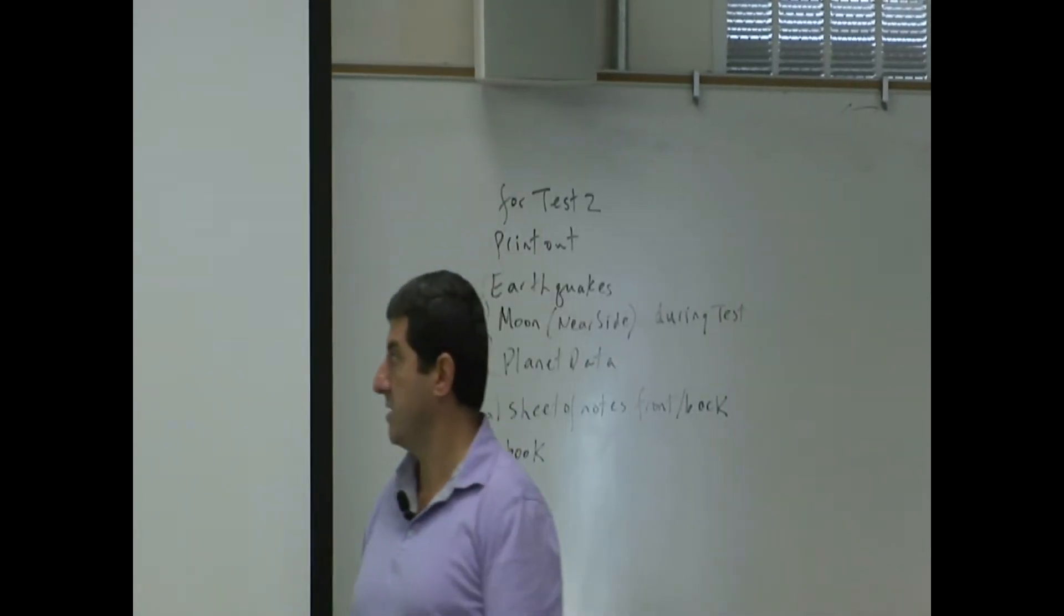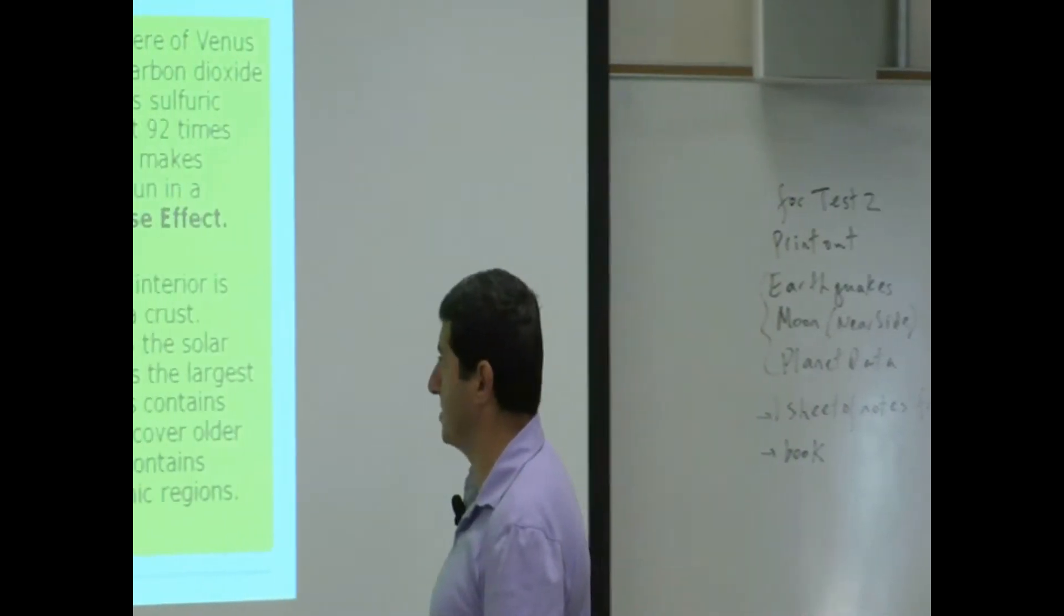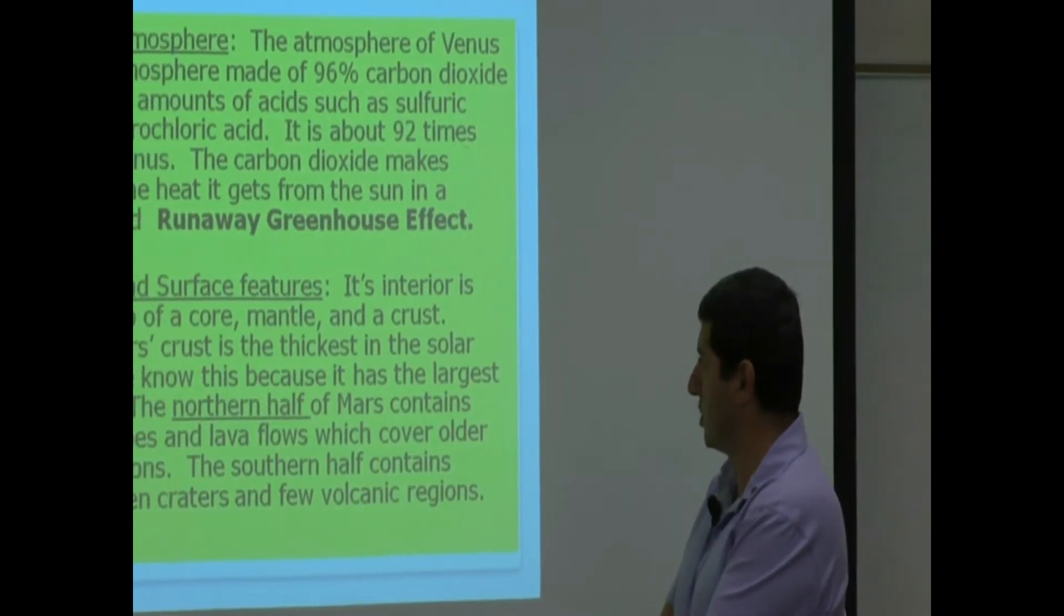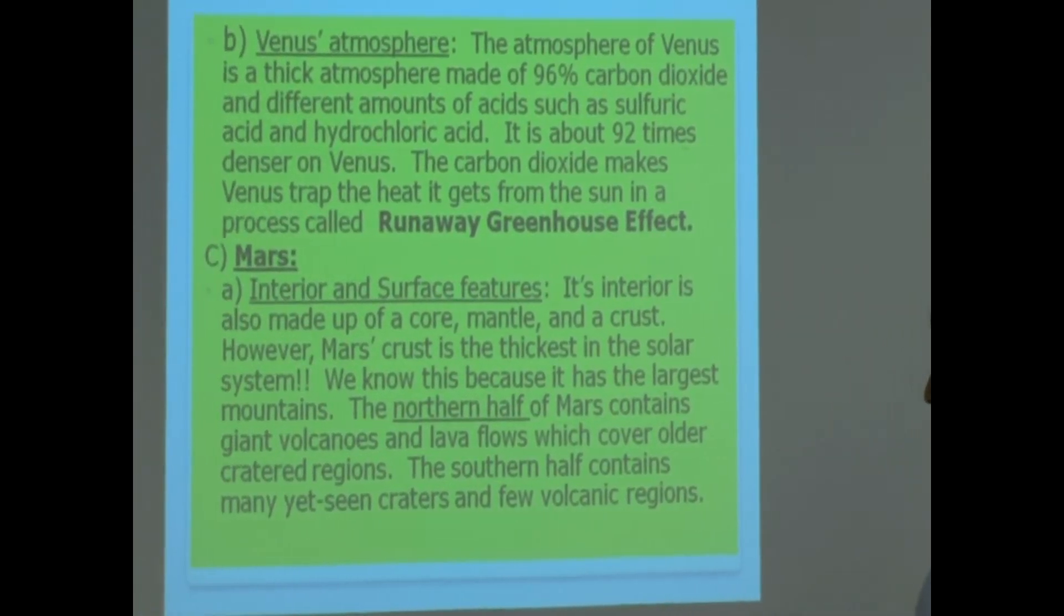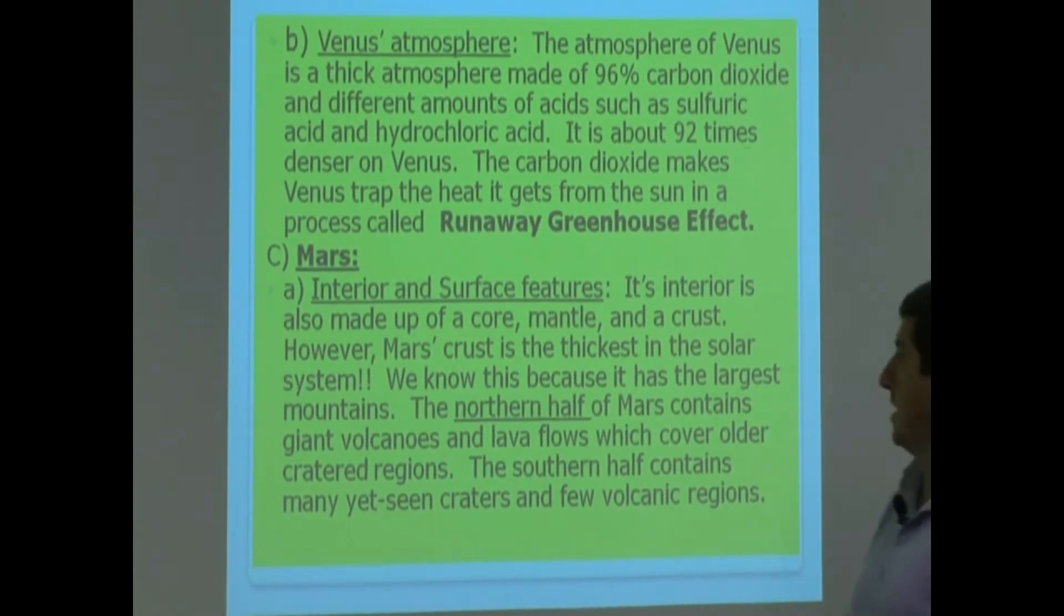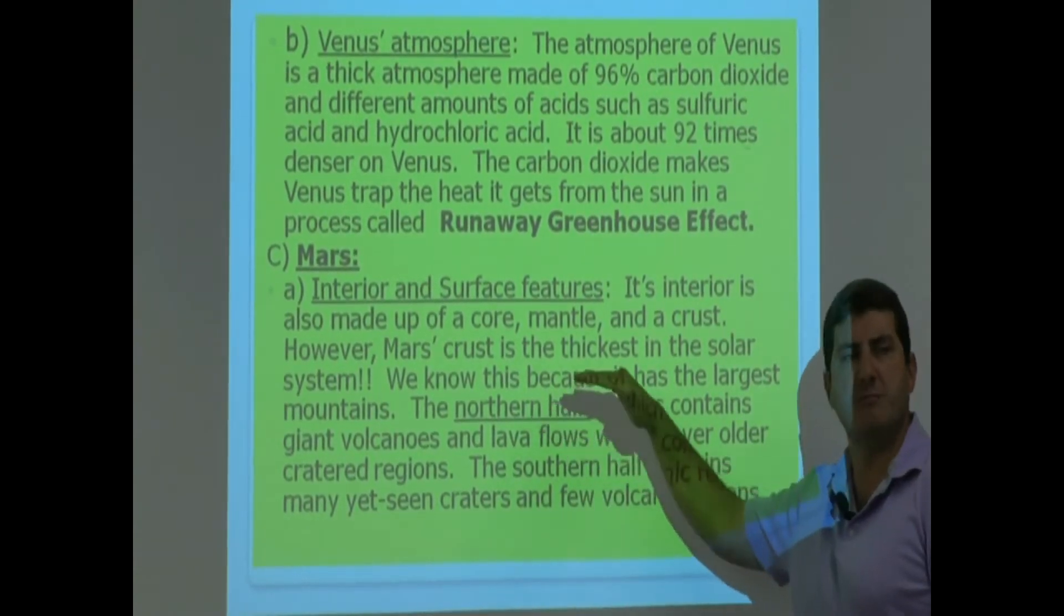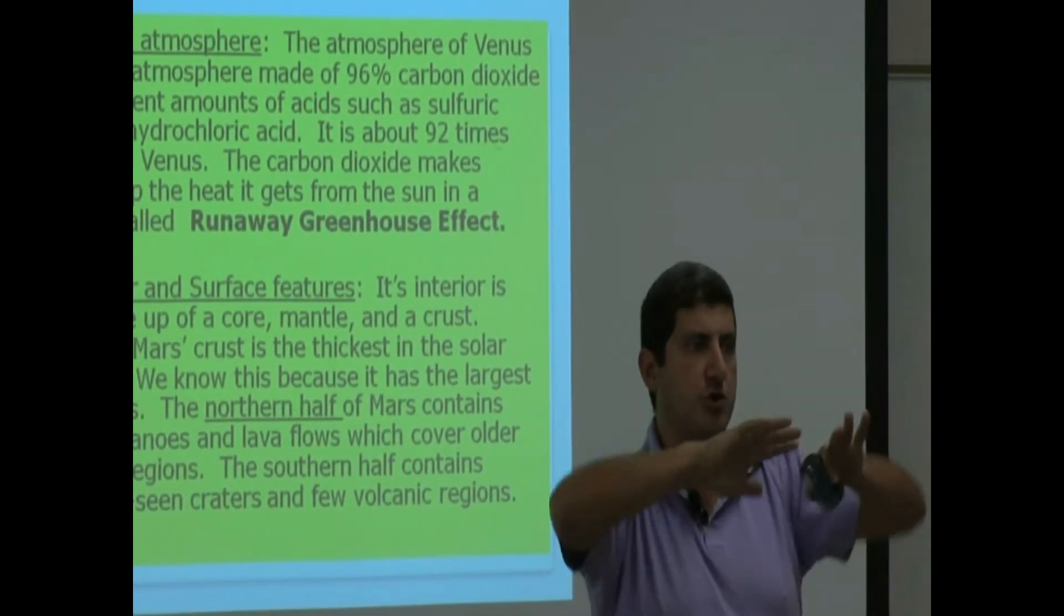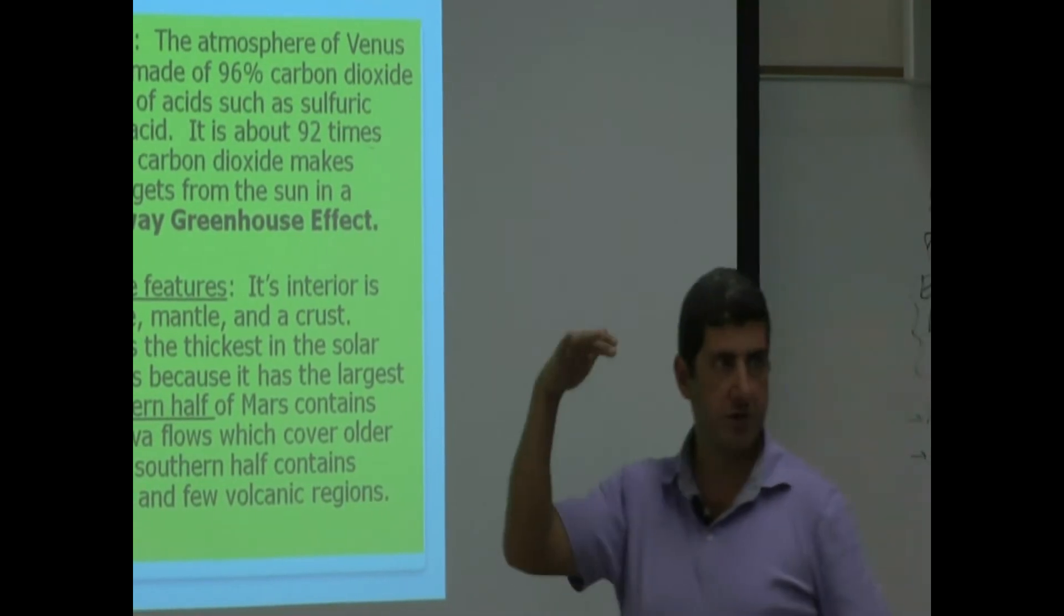That's why it's very thick and heavy. The northern half of Mars contains giant volcanoes and lava flows which cover older, cratered regions. The southern half contains many yet seen craters. In other words, the northern half seems to be missing craters. The lava flows have covered them up, and it looks smoother, the northern half.